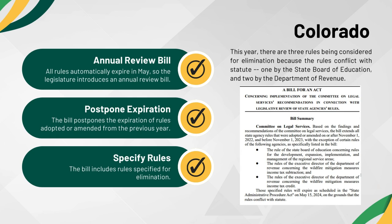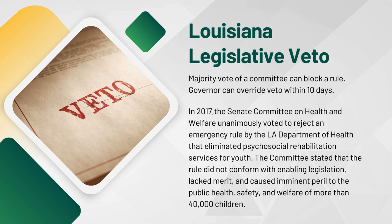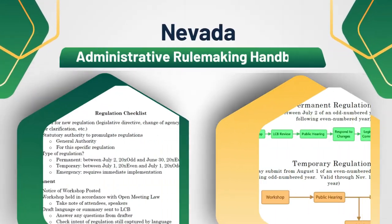The annual rule review bill in Colorado is a strong example of routine legislative oversight. Louisiana has a legislative veto where a majority vote of a committee can block a rule. The governor has the power to override this veto within 10 days, but the action of a veto can send a strong message of disapproval on the course of action to the administration. An example is the 2017 emergency rule review for the Louisiana Department of Health. In response to tight budgets, the department created an emergency rule to eliminate psychosocial rehabilitation services for youth. The Senate Committee on Health and Welfare voted unanimously to reject the emergency rule, saying it was not in conformity with the enabling legislation, lacked merit, and caused imminent peril to the public health, safety, and welfare of more than 40,000 children with significant behavioral health needs.